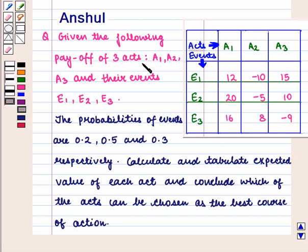of three acts A1, A2, A3 and their events E1, E2, E3. The probabilities of events are 0.2, 0.5 and 0.3 respectively.